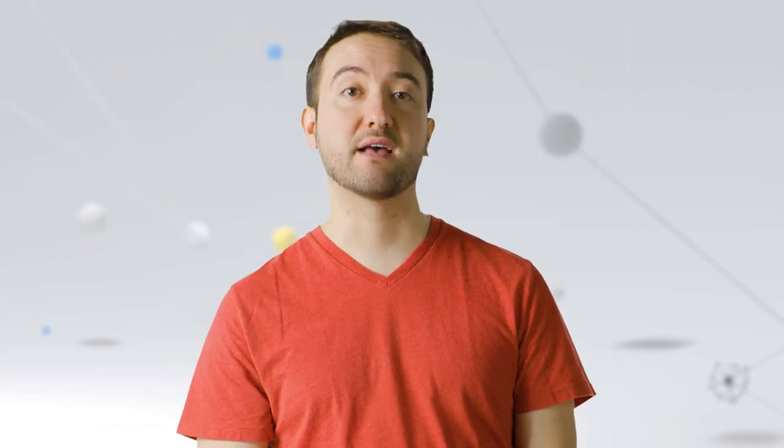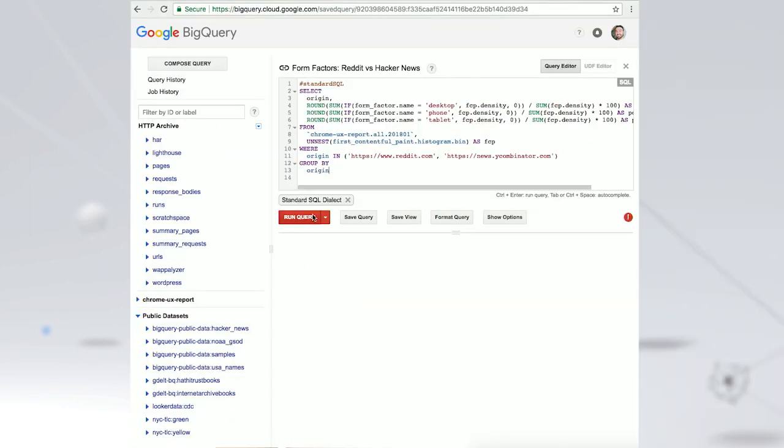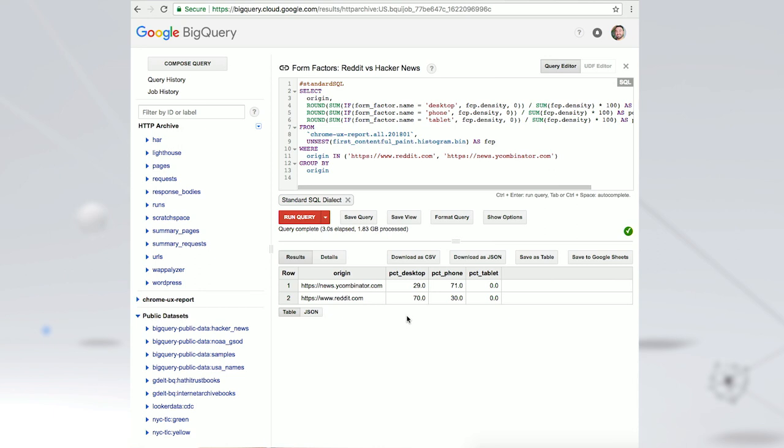The Chrome UX report also has another hidden power beyond performance metrics. It can show the relative distributions of form factors and effective connection types. Building on our competitive analysis, let's see how users interact with these sites on different devices. Surprisingly, the sites have very different usage patterns on desktop and mobile. With Hacker News 70-30 in favor of mobile, and Reddit 70-30 in favor of desktop. Both sites have a very small percent of tablet usage.